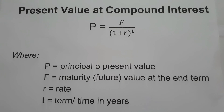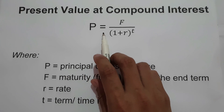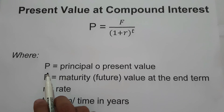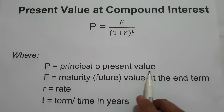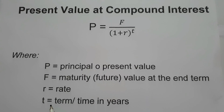For today's video, we are going to focus our discussion on how to find the present value at compound interest compounded annually. To find the present value, we are going to use the formula P equals F over 1 plus R raised to T, where P is the principal or the present value, F is the maturity value or the future value at the end of the term, R is the rate, and T is the time in years.